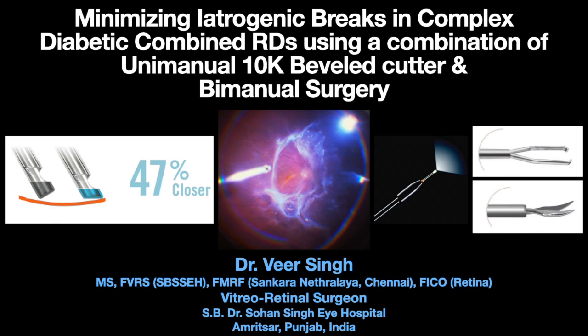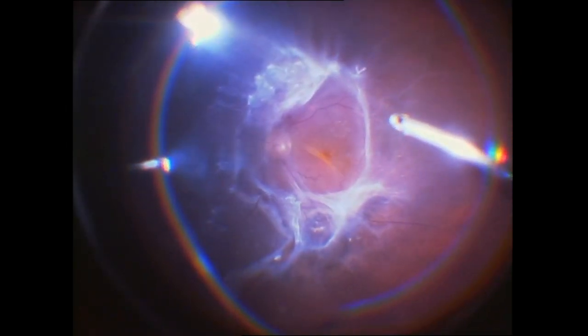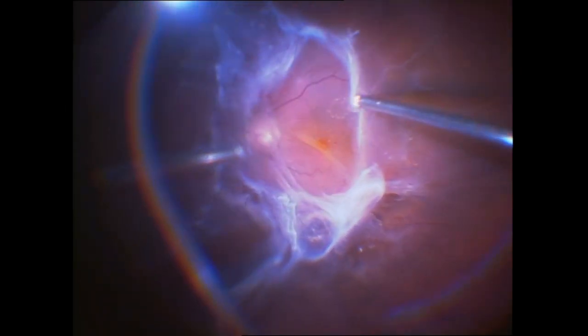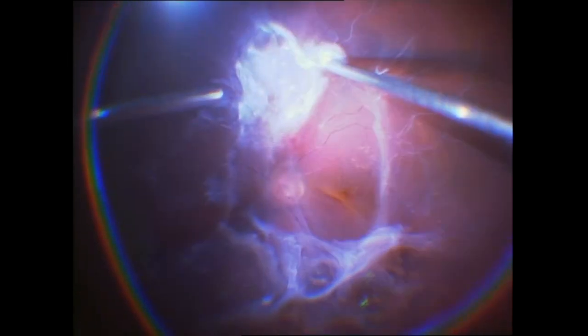The case is started by trying to segment the membranes by using the cutter itself. As the retina is not so mobile in the beginning of the case, it's fairly easy to segment and remove these membranes just with the cutter.